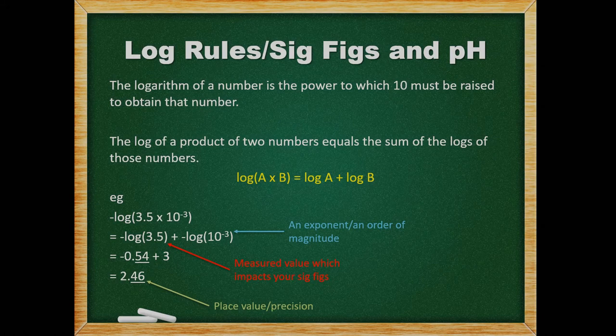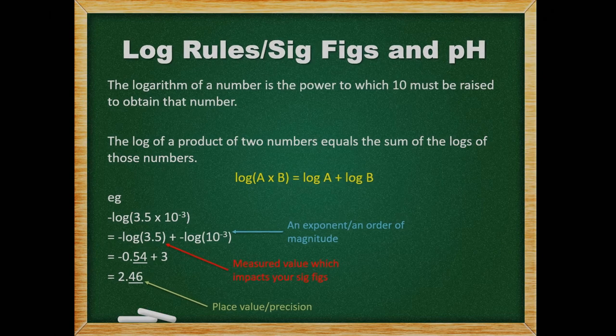The logarithm of a number is the power to which 10 must be raised to obtain that number. Note that the log of a product of two numbers — log(a × b) — equals the sum of the logs of those two numbers. In this example, we are taking the log of 3.5 × 10⁻³. We can break this apart into two separate logs. The 10⁻³ is exact and will not impact our sig figs because it is an order of magnitude, not a measured value, so it really has an infinite number of sig figs. On the other hand, the 3.5 is only good to two sig figs, and it will determine the number of sig figs in the answer. When summing the values, precision determines the number of sig figs. The first value is good to the second decimal place, while the second has infinite sig figs. Therefore, our final answer will be good to two decimal places.